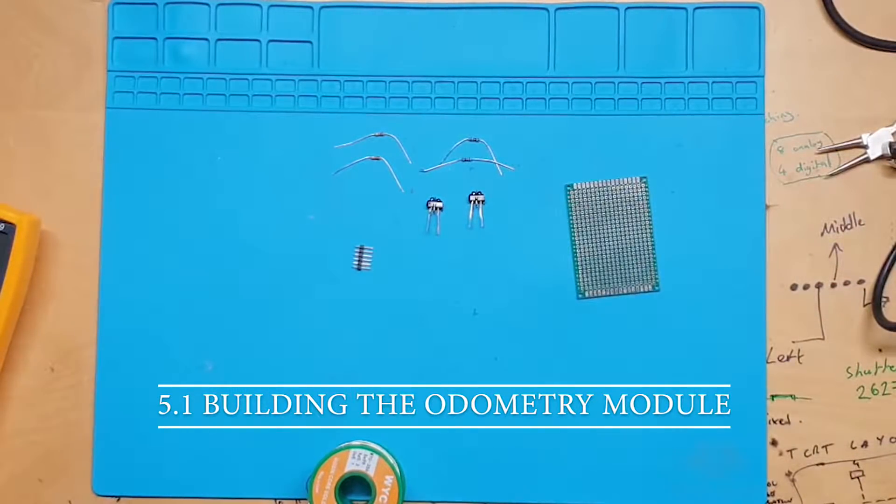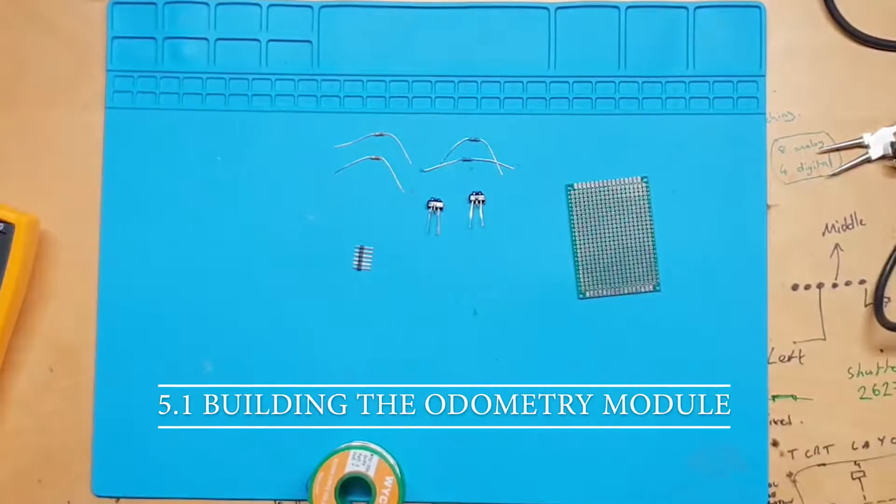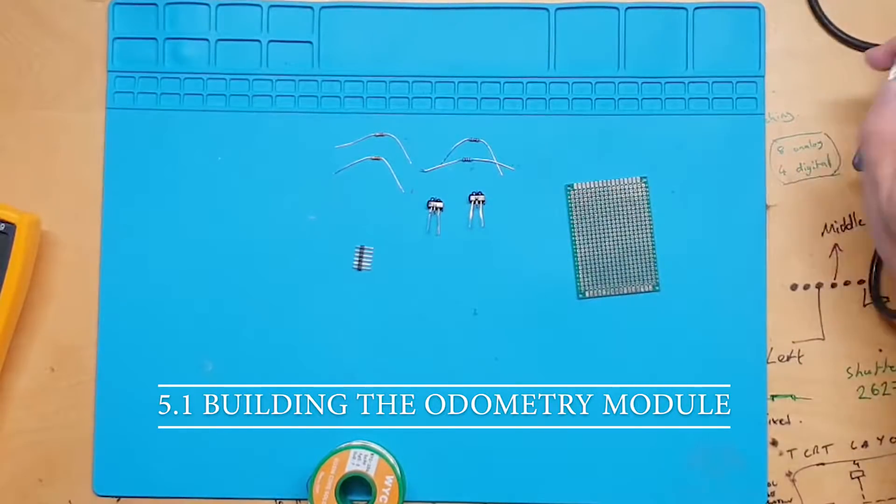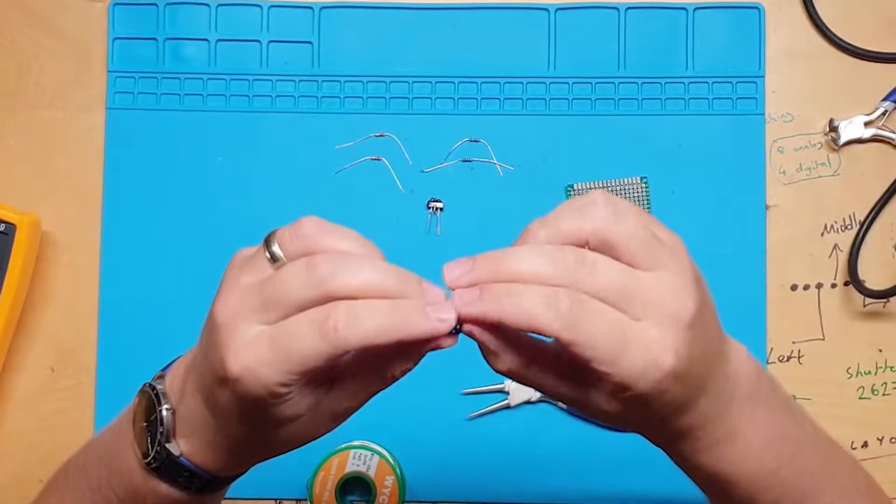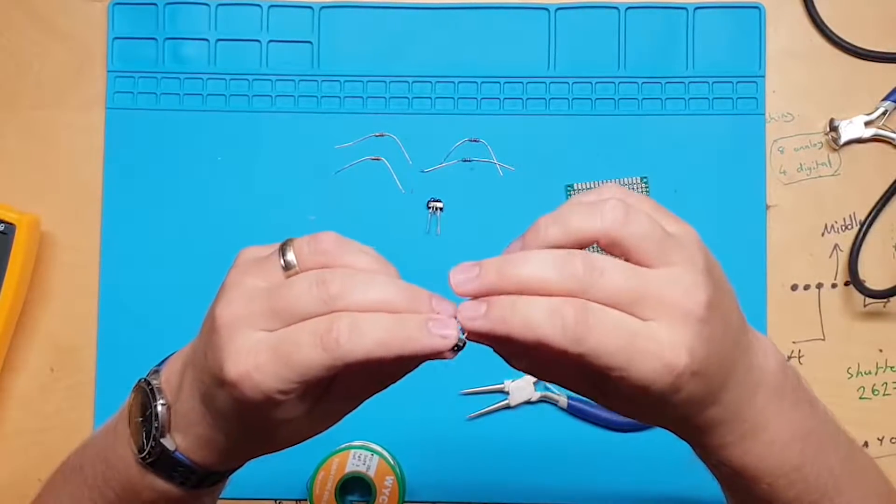Hi guys! Today we're going to build the odometry module and configure it. The odometry module will allow us to count how many times the wheels rotate. From this we will be able to measure the distance traveled and speed of Mipper.